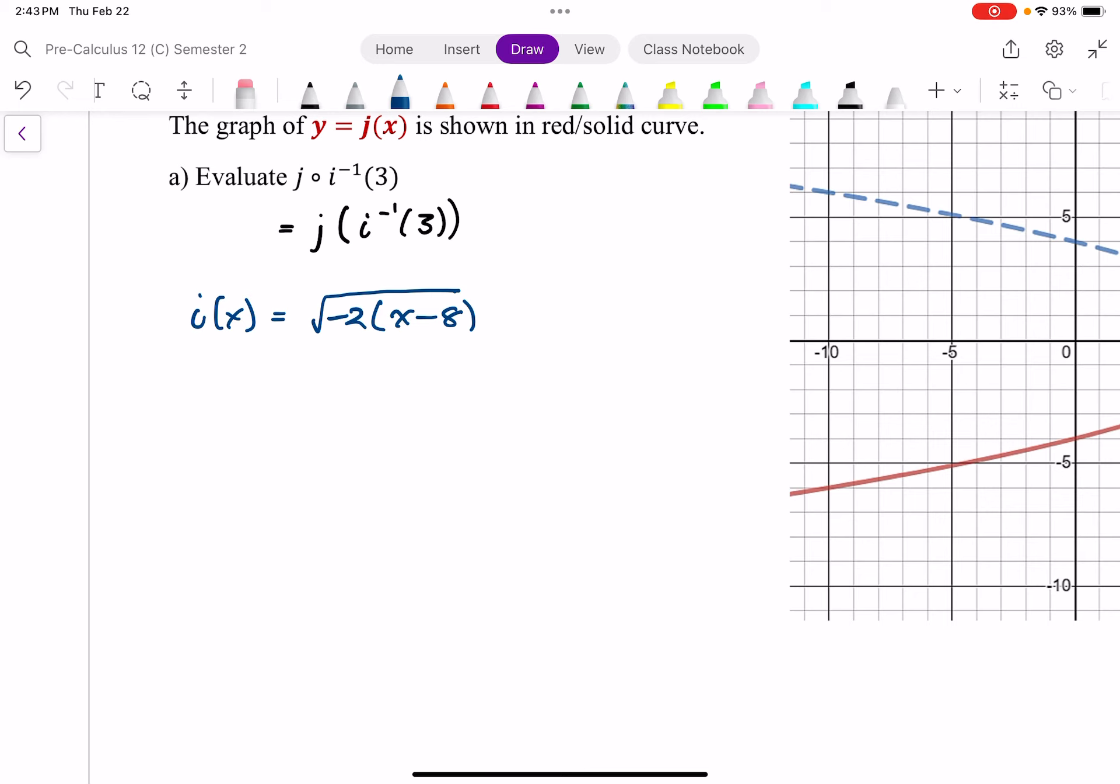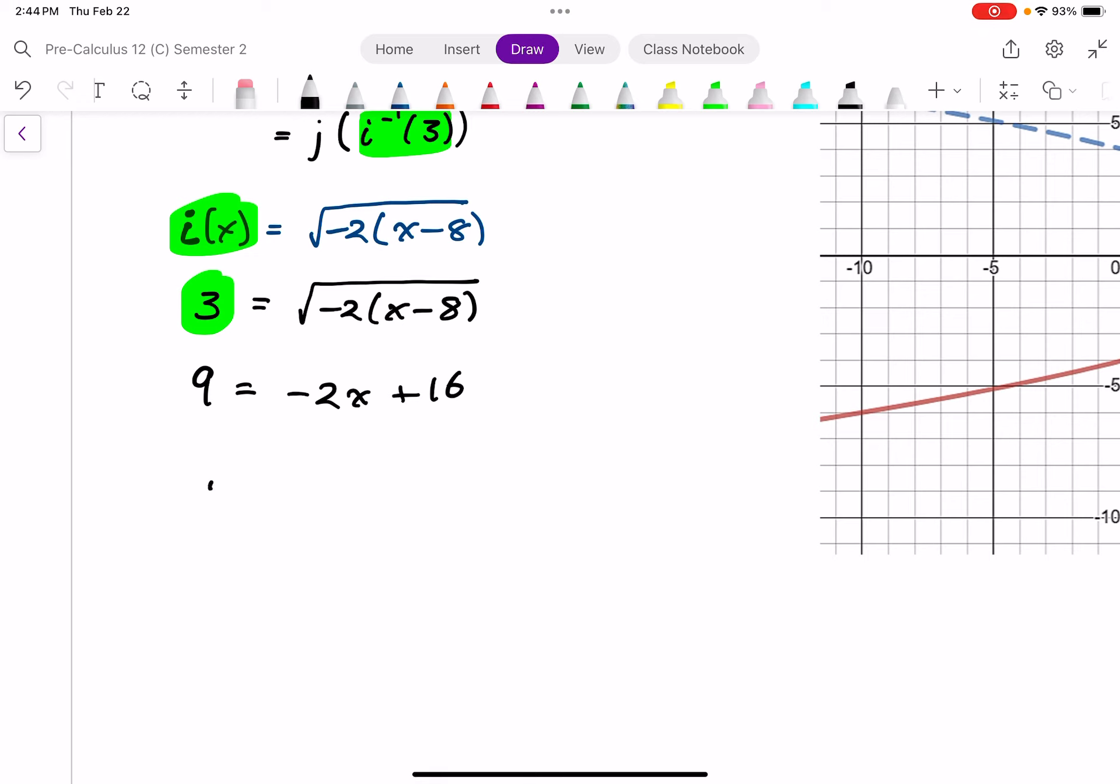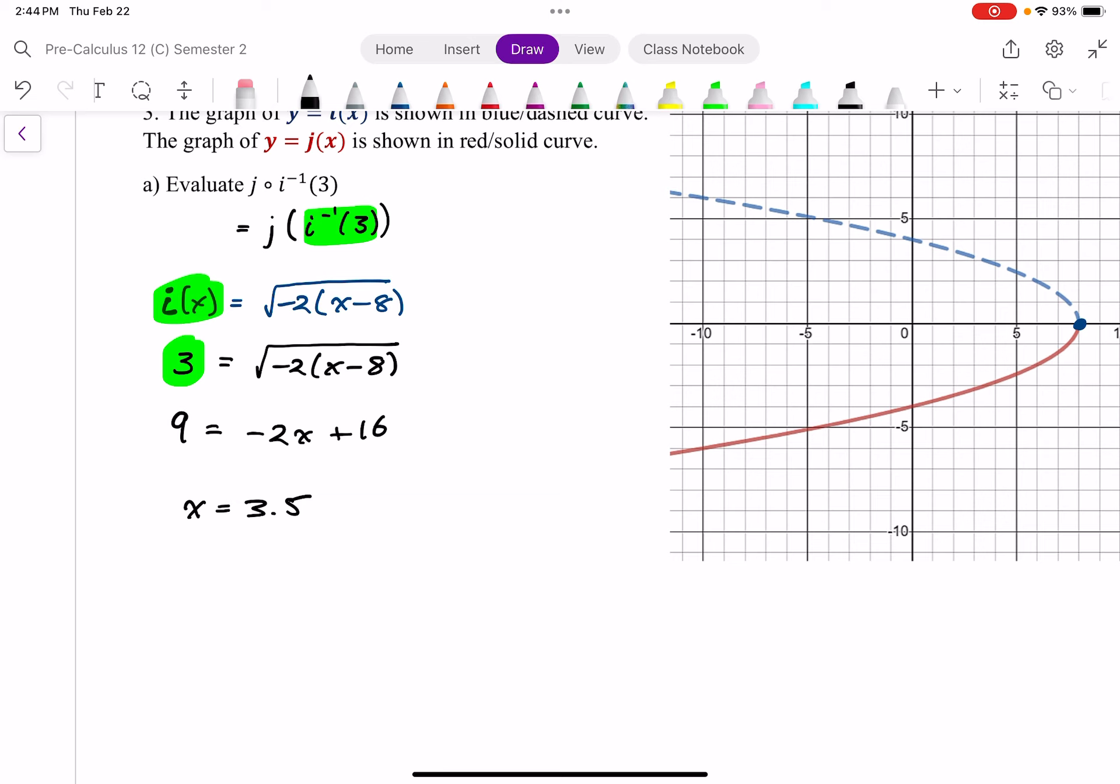All right. So with that said, if I want to find just this part here, the inverse of i at 3, I don't actually have to find my inverse function. One way of figuring this out is to realize that finding the inverse of i at 3 is equivalent to finding where function i equals 3. So I can take this equation and make 3 my output and figure out what has to go in. Alternatively, I could actually find the equation for the inverse of function i and then substitute 3 into that. But this is going to be less work. And so I have just, again, putting 3 into an inverse, same as 3 coming out of, in this case, i. And so I'm going to square both sides. So I get 9 equals negative 2x plus 16. Solve for x. Pretty quickly, you get x equals 3.5. So that means I know the inverse of i at 3 is 3.5.